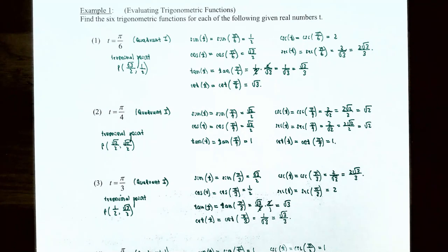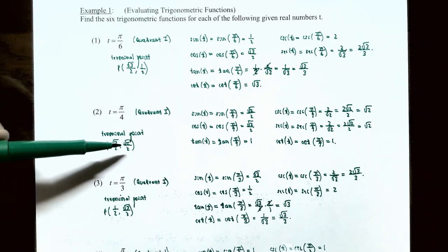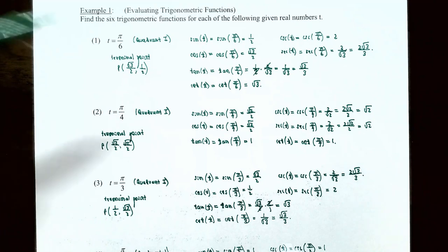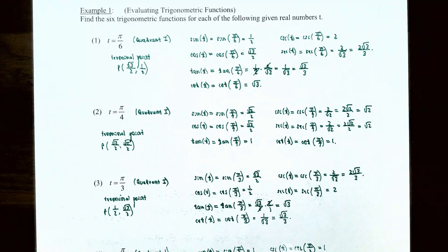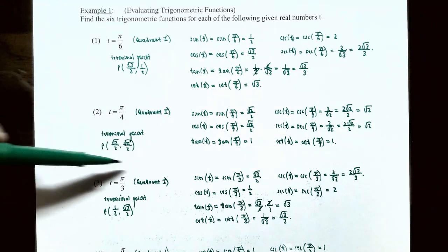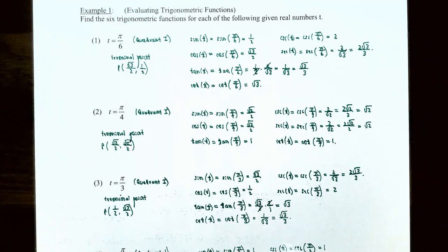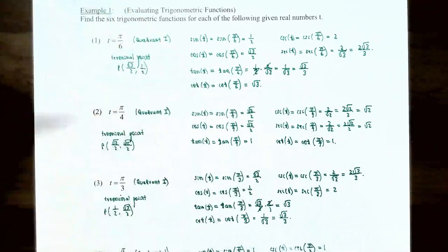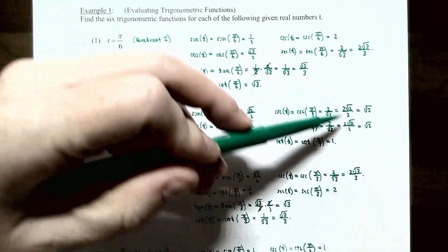For T equals pi over 4, or 45 degrees, the terminal point is (√2/2, √2/2). Sine of pi over 4 is √2/2 (the y-coordinate). Cosine of pi over 4 is also √2/2 (the x-coordinate). Tangent of pi over 4 is y divided by x; since both coordinates are equal, the ratio is 1. Cosecant of pi over 4 is the reciprocal of y: 2/√2, which rationalizes to √2.